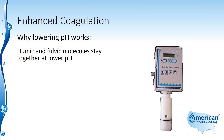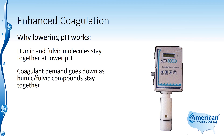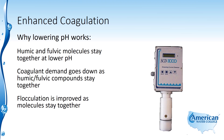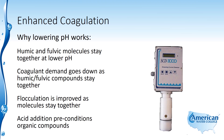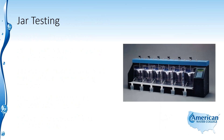Why does this work? Humic and fulvic molecules stay together at a lower pH. These humic and fulvic molecules are the natural organic or decaying organic material found in surface water supplies. At a lower pH, they tend to stay together, which helps with the flocculation. The coagulant demand goes down as these compounds stay together, and flocculation is improved. The acid addition — because that's how we lower the pH, typically by adding sulfuric acid — preconditions the organic compounds and helps the flocculation process.